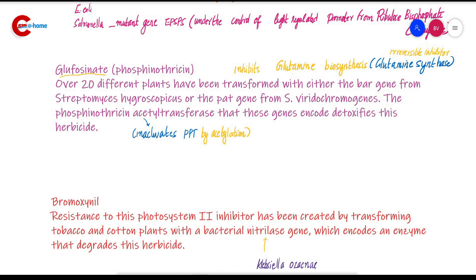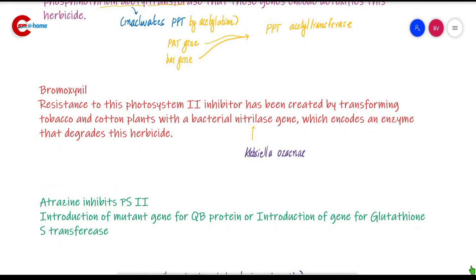To develop phosphinothrixin-resistant plant varieties, one strategy is overexpression of the glutamine synthase gene. The other is to incorporate phosphinothrixin acetyltransferase, which inactivates phosphinothrixin by acetylation. Both the bar gene from Streptomyces hygroscopicus and the pat gene from Streptomyces viridochromogenes encode this phosphinothrixin acetyltransferase enzyme.